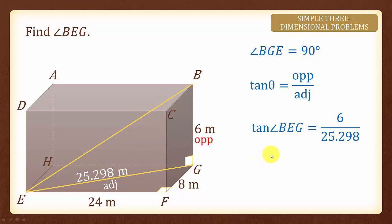To find angle BEG we shall inverse tangent on both sides. And we will have angle BEG equals to the inverse tangent of 6 over 25.298. By pressing your calculator we will have 13.3 degrees rounded off to one decimal place.